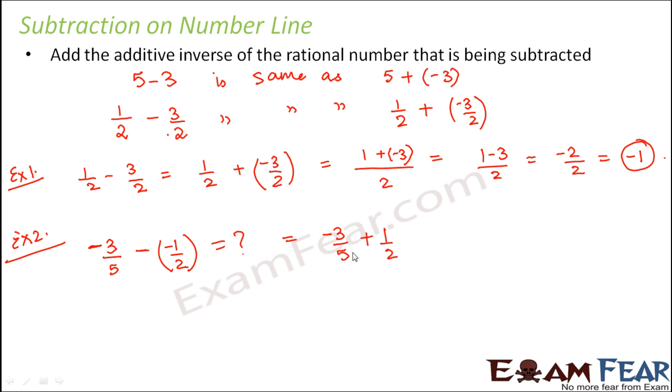Now how do we add this? They have different denominators, so we have to find the LCM of the denominator. LCM of 2 and 5 would be 10. Minus 3 by 5, if you multiply by 2, you get minus 6 by 10. Similarly for 1 by 2, multiply by 5 to get 5 by 10.